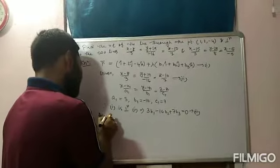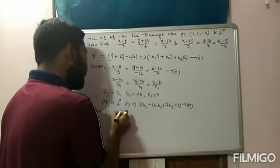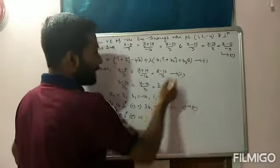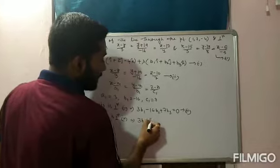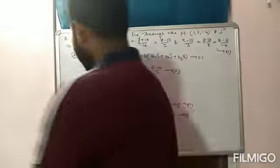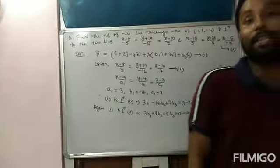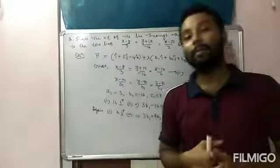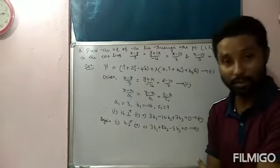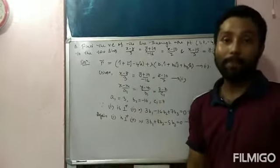Equation 1 is also perpendicular to the second line, which has direction ratios 3, 8, −5 (equation 4). So: 3B₁ + 8B₂ − 5B₃ = 0. This is equation 5. In the previous question the line was parallel to planes, here the line is perpendicular to two lines — but the condition used is the same: A₁A₂ + B₁B₂ + C₁C₂ = 0.